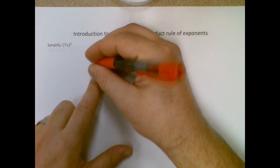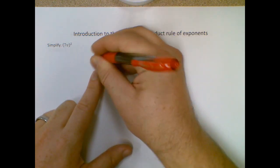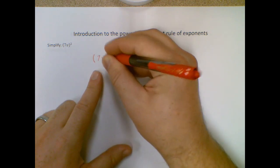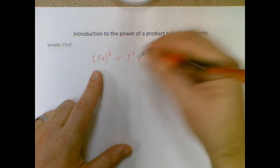This is a pretty simple process as long as you remember that the exponent needs to apply to everything. So if I have (7v)^2 right now, that's the same thing as 7^2 times v^2.